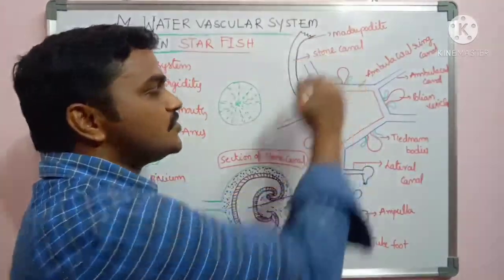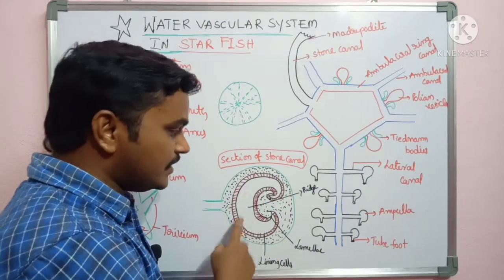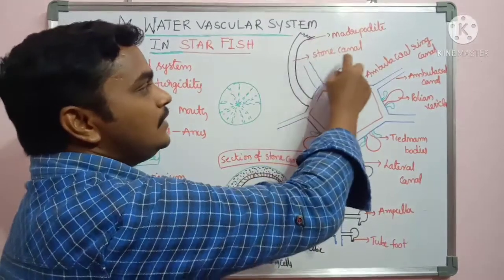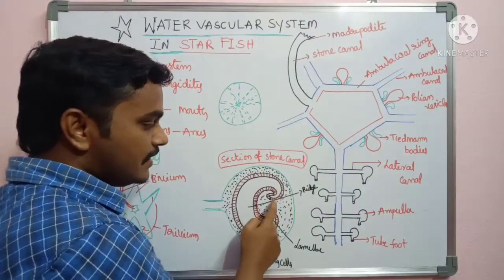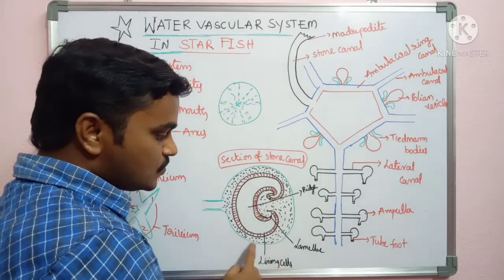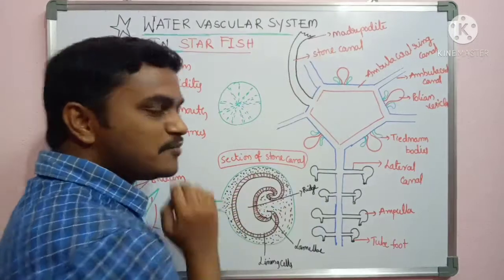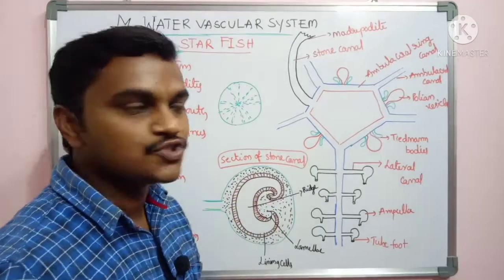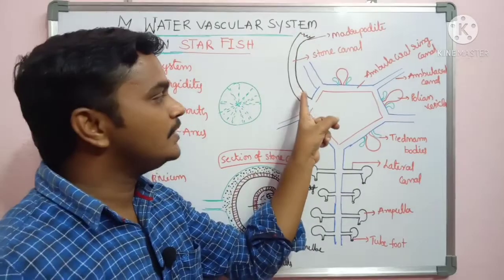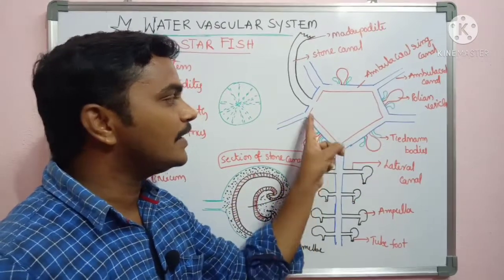If you see the cross-section of the stone canal, there are some lamellae present inside it. The stone canal contains ridges and lamellae in these regions. Water enters through the madriporite, passes through the stone canal, and then automatically water enters into the ambulacral ring.